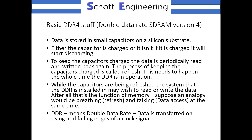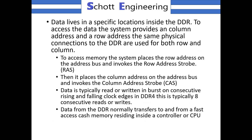We need to somehow sequence breathing — like refresh — and data access — like talking — in a way that makes it transparent. By the way, DDR means double data rate. It means data is transferred on rising and falling edges of a clock signal.